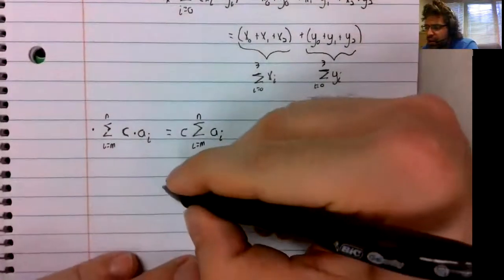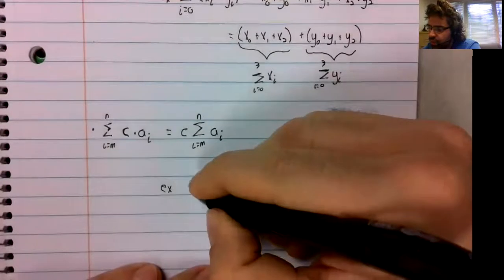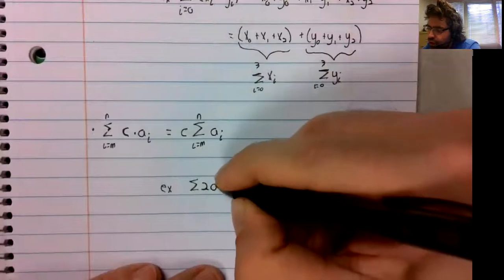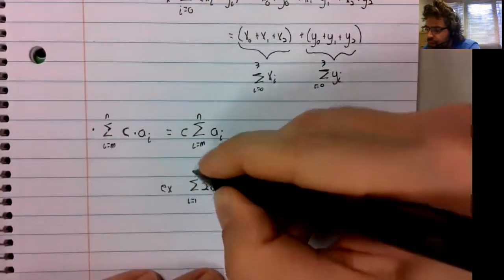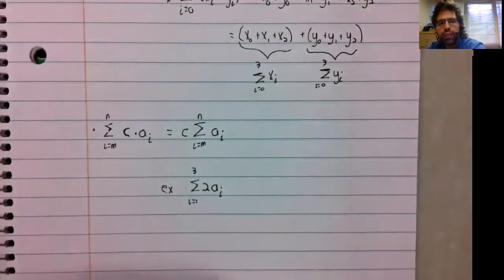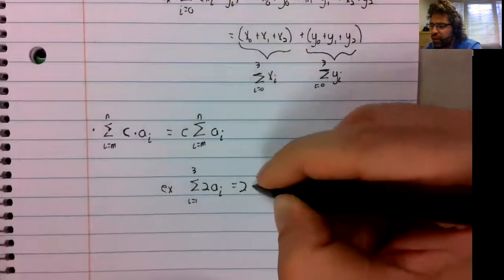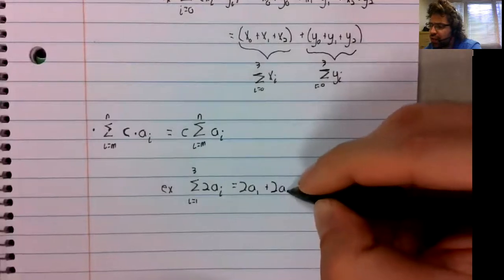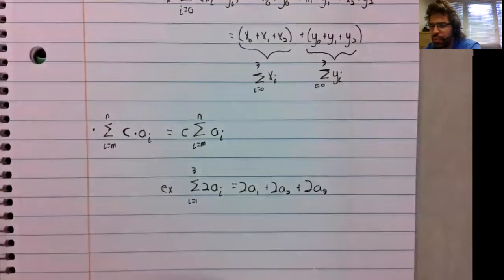And again, this is something where if it's not obvious immediately, it should become so with an example. The sum of two times a sub i, where i goes from one to three, is two a sub one plus two a sub two plus two a sub three.